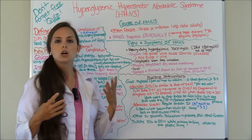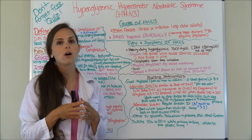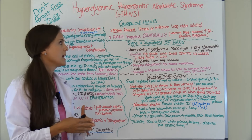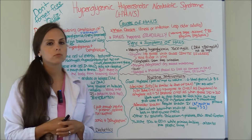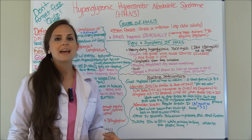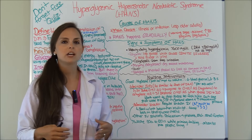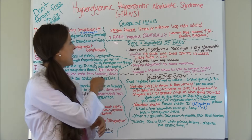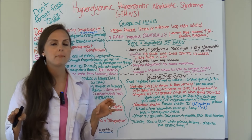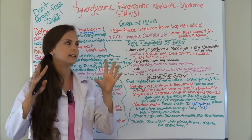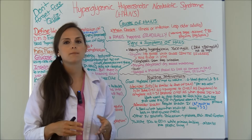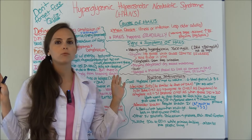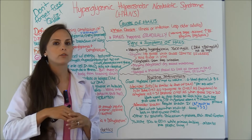The main cause of why a patient enters HHNS is usually some type of illness or infection, especially in older adults — they're really susceptible to this. An NCLEX question may ask which patient is most susceptible to HHNS; look for a patient who has an infection and is an older adult. HHNS typically happens gradually over time, unlike DKA which happens suddenly. Patients may notice their blood sugars are not even reading on the monitor, or are greater than 600.